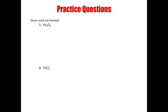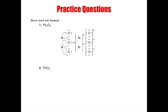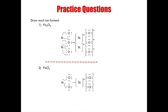Here are two more practice questions showing the formation of ionic compounds using Lewis structures. Example one is iron three oxide — there are two iron ions for every three oxygen ions, with the electron movement representation to the left. Beneath that is iron two chloride, an easier example with one iron ion for every two chlorine ions, making the electron movement representation quite easy to understand.